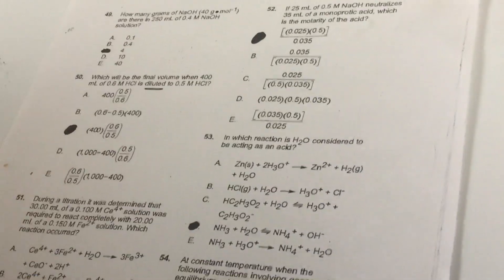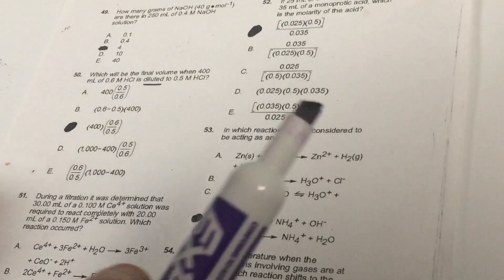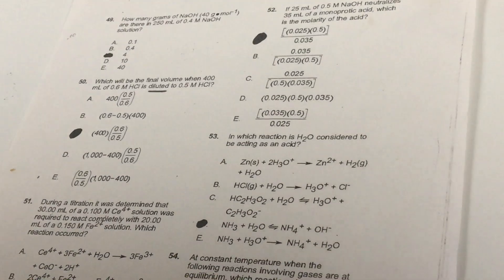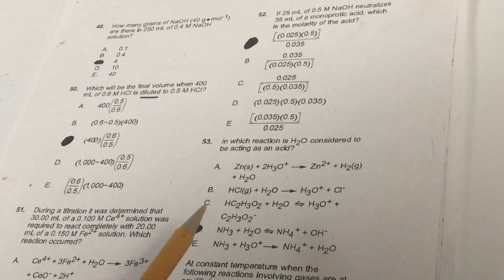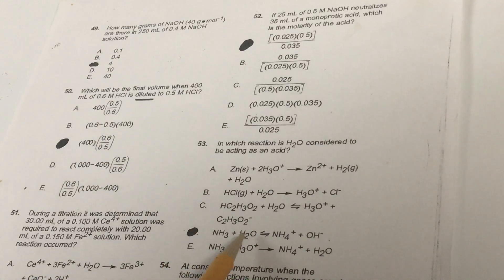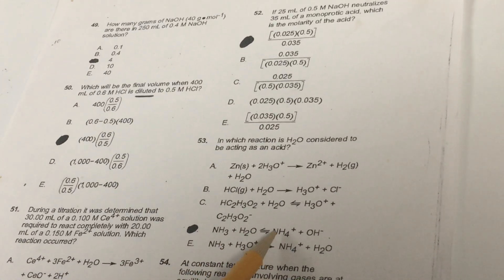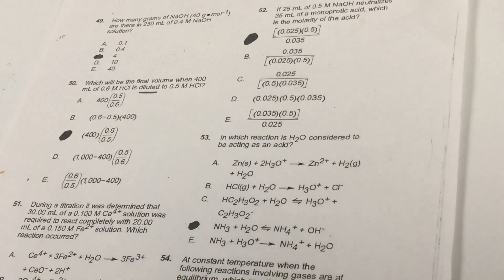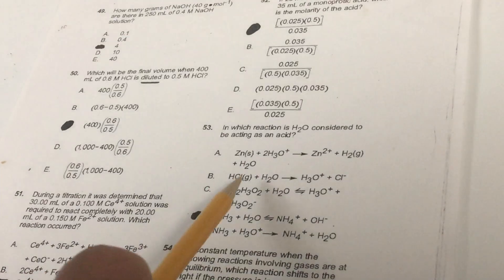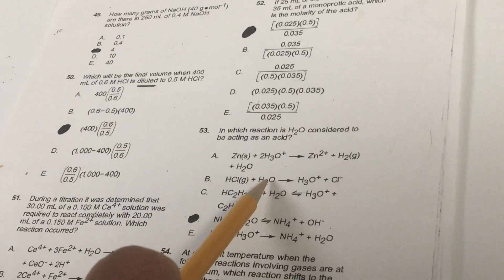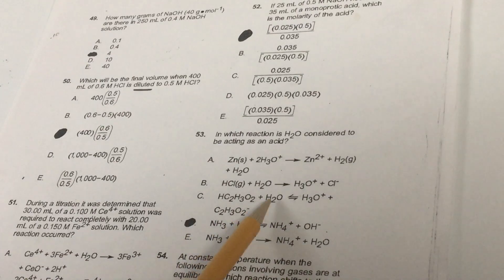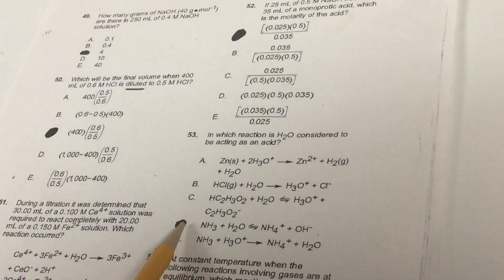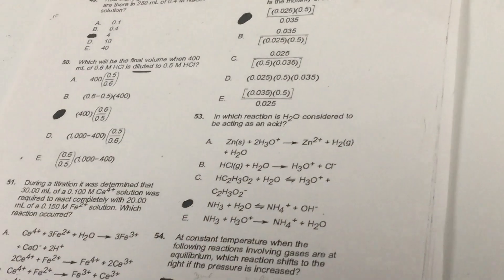In the next question, we want to know in which reaction is water considered to be acting as an acid. Remember, acids give off H plus ions. None of the other ones show that. For example, if you go to choice letter D, if water gives off an H, it would give you the NH4 plus and OH minus. All the other ones just would be wrong. If you look at B, water is not giving off an H, but water is accepting an H. If you look here, it's the same thing, water is accepting an H. The only one that's showing water is giving off an H would be in choice letter D.